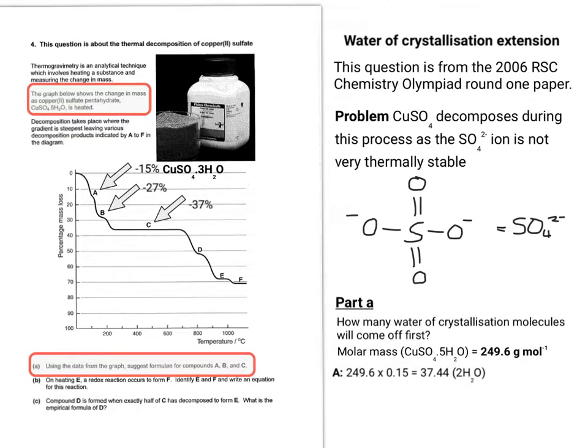So if we work it out for A, we lose two H2Os. That's 37.44 approximately. We can do the same for B and C quite easily by working out what 27% loss in mass would be and what 37% loss in mass would be. So what you can see is happening is you're getting successive amounts of H2O taken off.